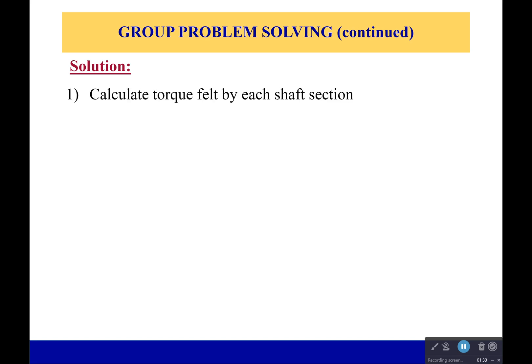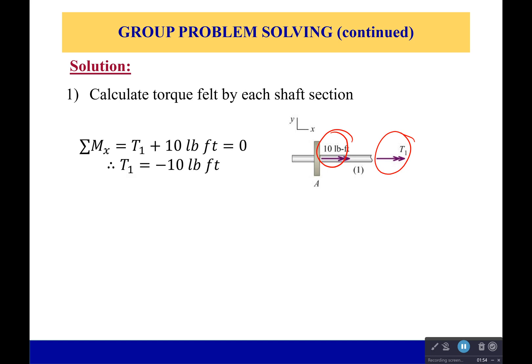Now we need to calculate the torque felt by each shaft section, so let's draw free body diagrams. In my first section, I only see that 10 pound-foot torque. I've got T1 pointing away, which would make it counterclockwise and positive. But what we see is that it's actually going to be a clockwise moment on the internal torque, so it'll be negative 10 pound-foot.